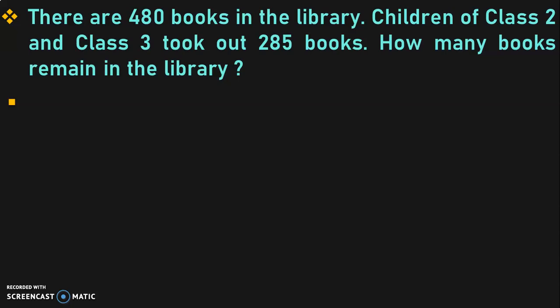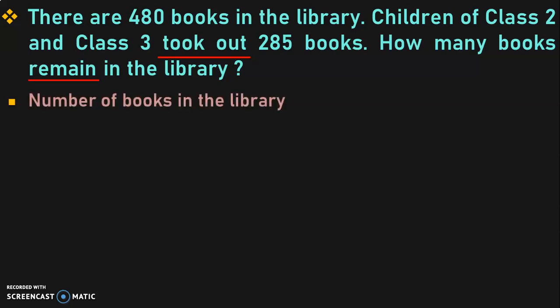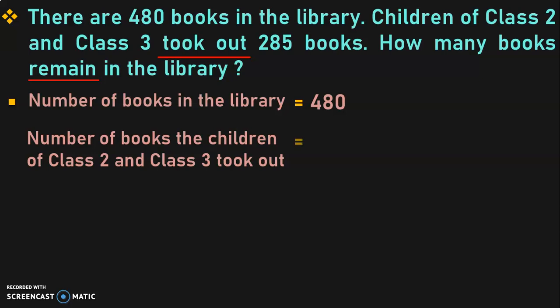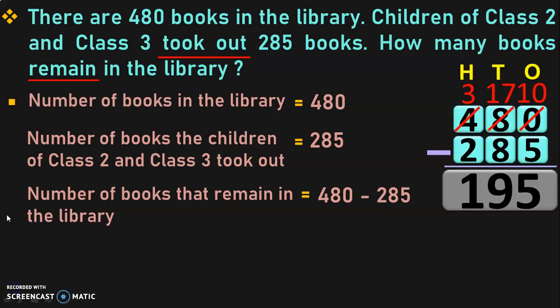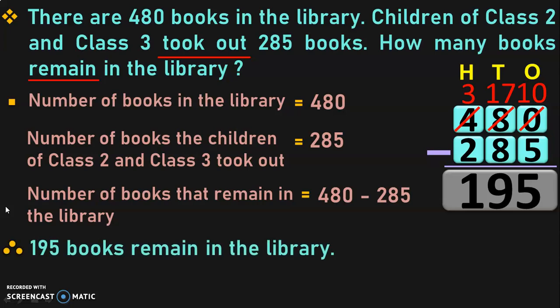Next question: There are 480 books in the library. Children of class 2 and class 3 took out 285 books. How many books remain in the library? The keywords here are 'took out' and 'remain.' Number of books in the library is equal to 480. Number of books taken out is equal to 285. Number of books that remain is 480 minus 285, which gives you 195. Therefore, 195 books remain in the library.